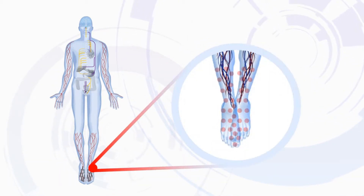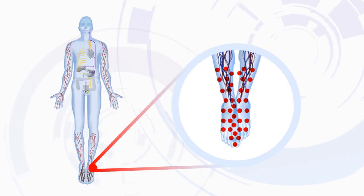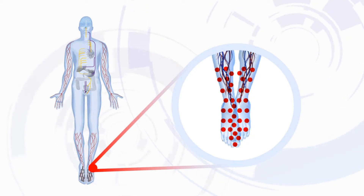The first signs of neuropathy start with small fiber nerve damage that occurs in the feet. The feeling is numbness, tingling, and/or burning.